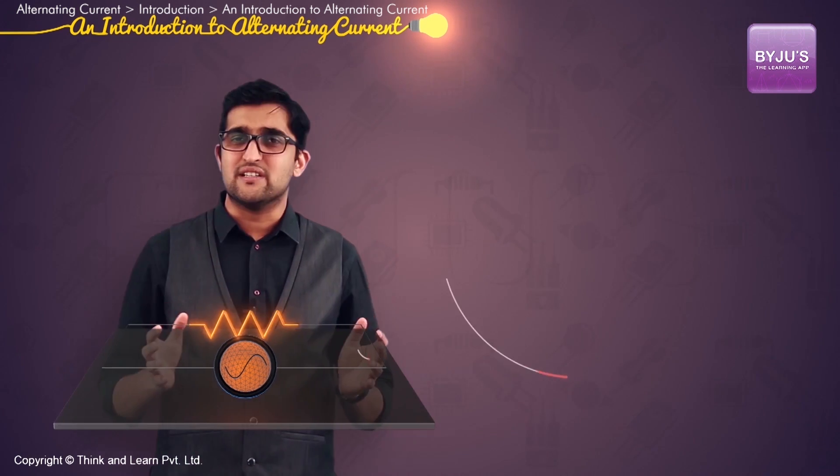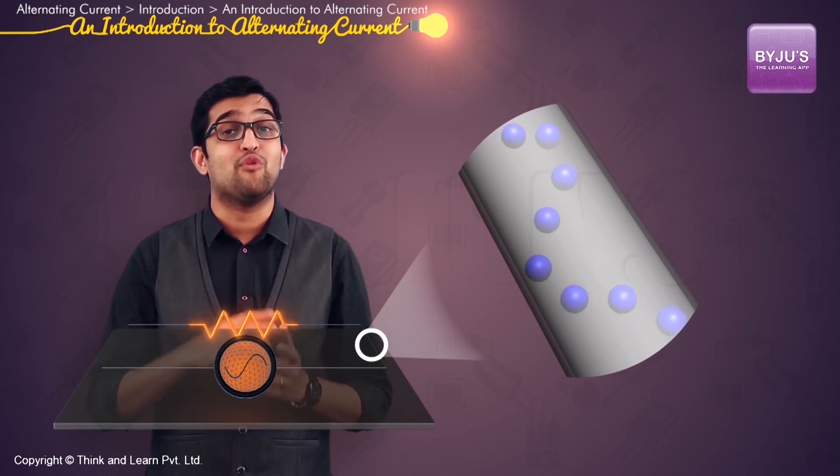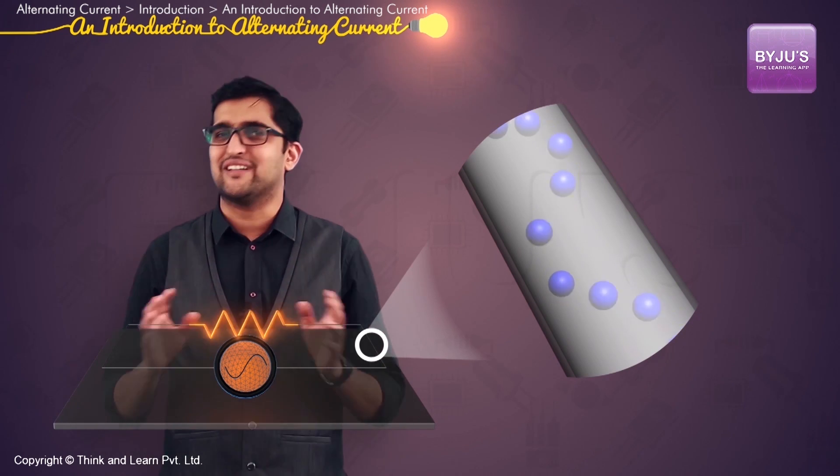Now if I have a current carrying conductor like this and I am passing a sinusoidal AC through this, how do I visualize the flow of electrons? I have an AC power supply for this purpose. Some of us have the misconception that the current moves in the conductor in the shape of a sine wave. This is not correct.